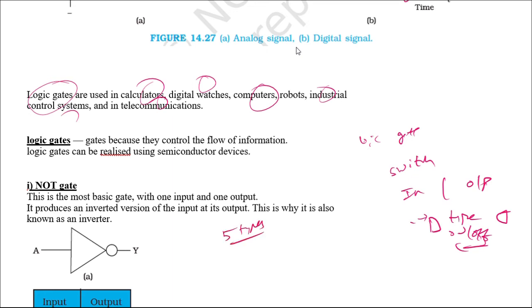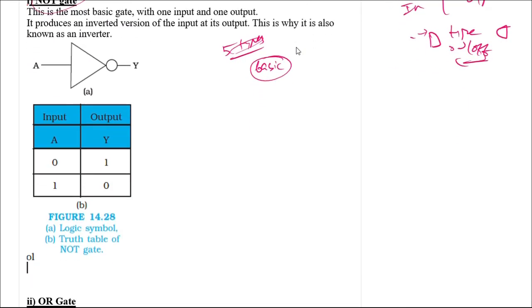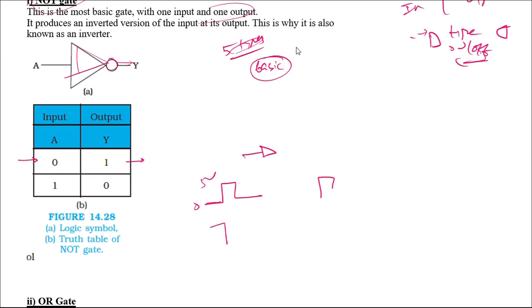One of the most basic gates is the inverter, also called the NOT gate. This is the most basic gate with one input and one output. It is represented using a triangle symbol followed by a small circle. When you give a zero input the output will be one; if your waveform is at zero volts, the output will be five volts, and when you give five volts input, the output will be zero. It inverts the output — that is why it is known as the inverter.